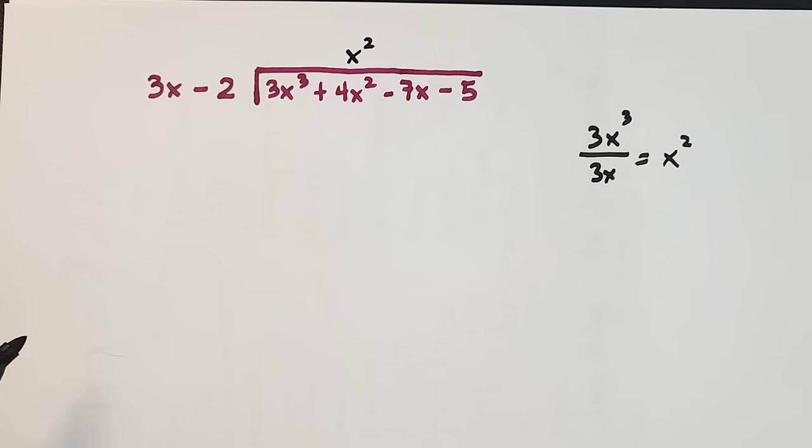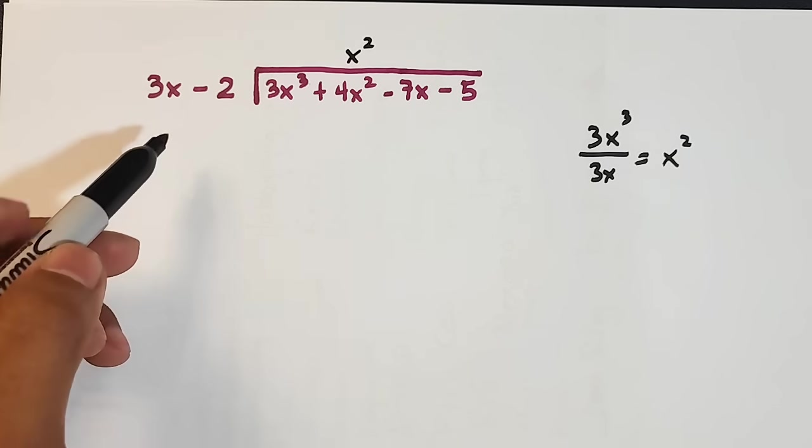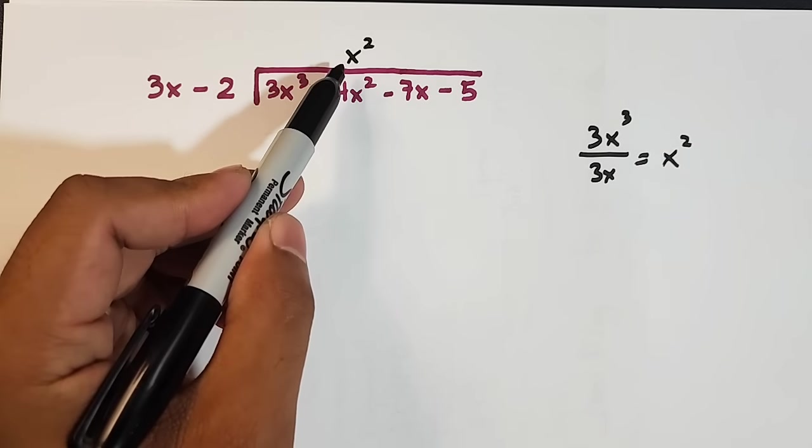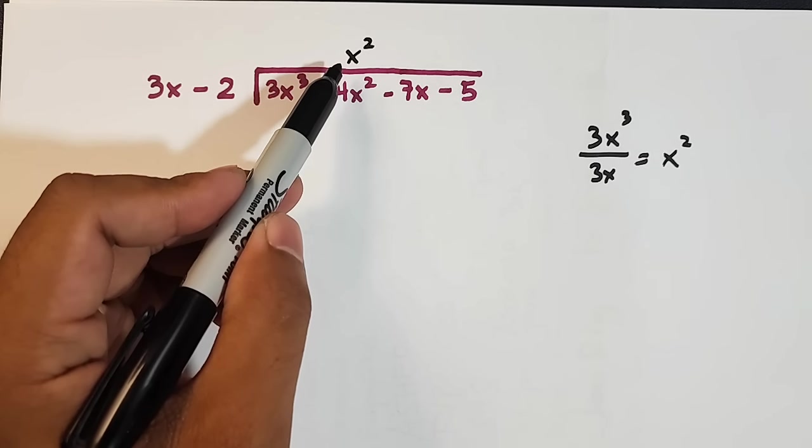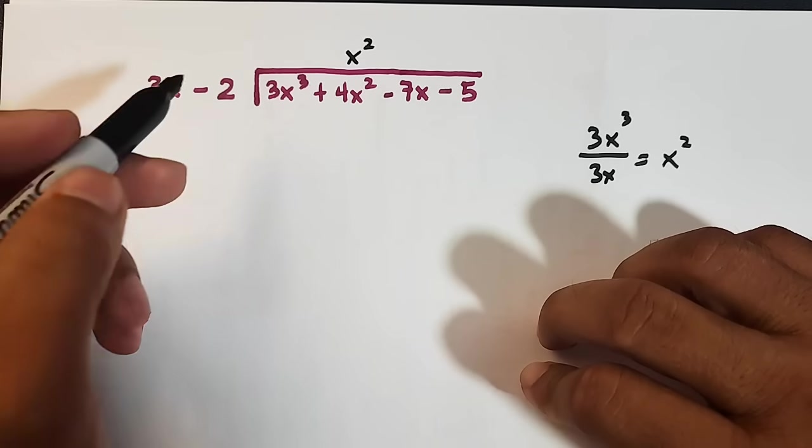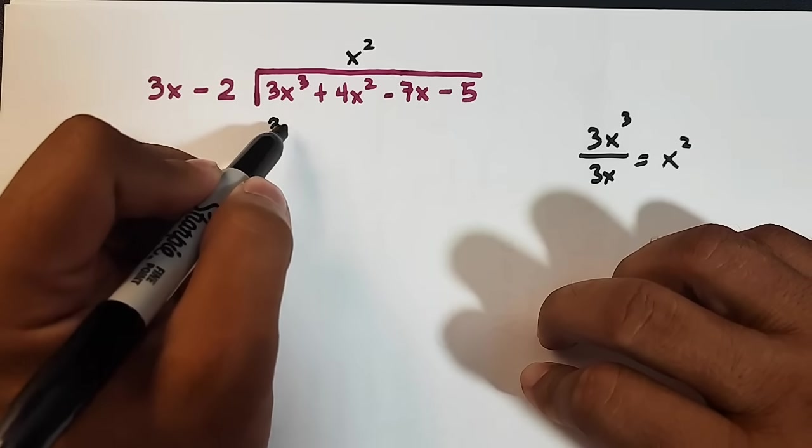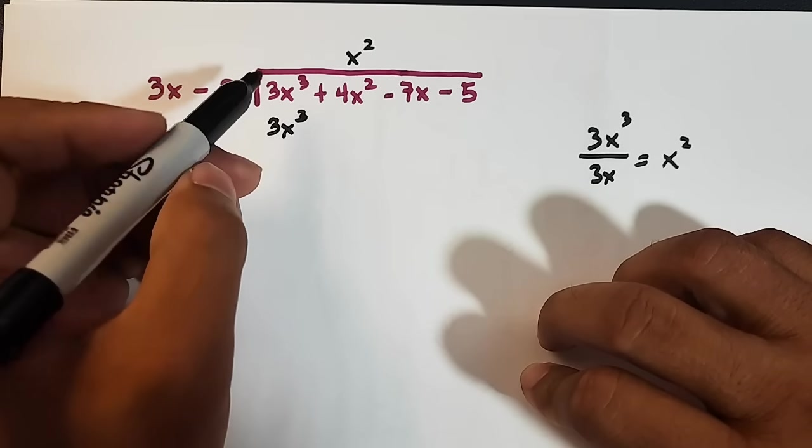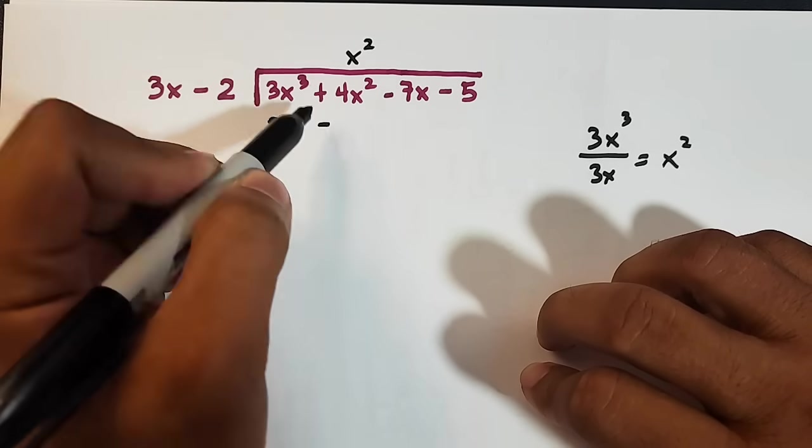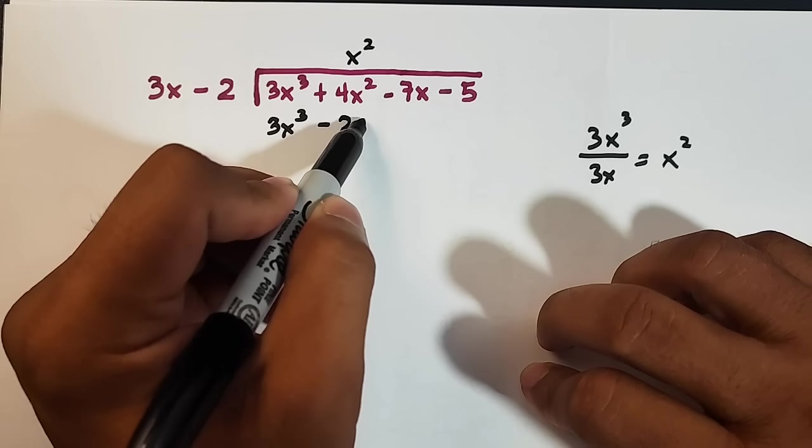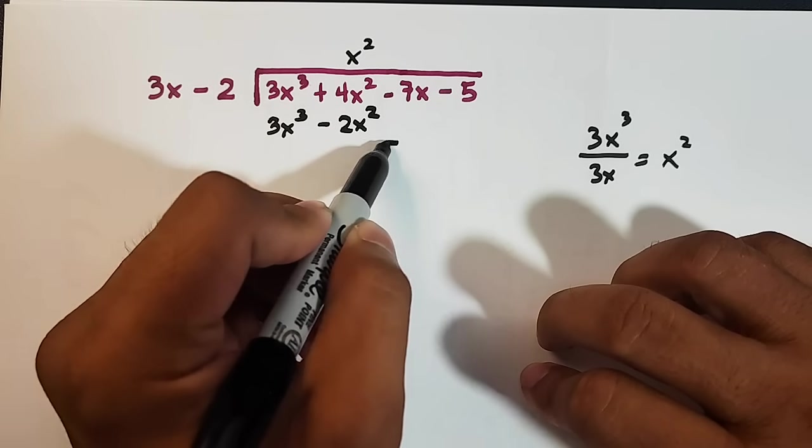So what's next sir? Our next is this. Multiply. 1 by 1. So we multiply, it will become this one. x square times 3x. That is 3x cube. x square times negative 2x. That is negative 2x square.